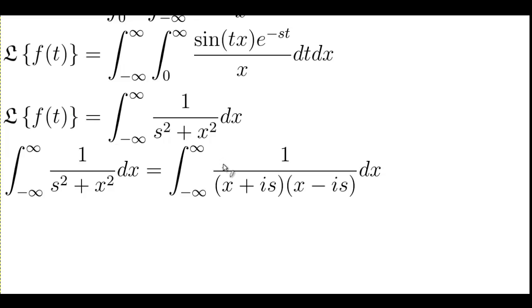When we factor the fraction here, we get x plus is times x minus is. That is to say, we have a pole located at plus is and a pole located at minus is.